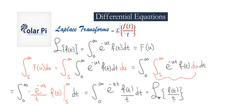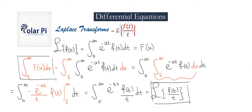So the Laplace transform for f of t over t, in terms of the Laplace transform for f of t, equals the integral from s to infinity of F of u du. That is the formula. In the next video, I'll show you how to use this formula to evaluate an improper integral — specifically, the integral from zero to infinity of sine x over x dx. All right, I hope you enjoyed this. Keep watching. Take care.